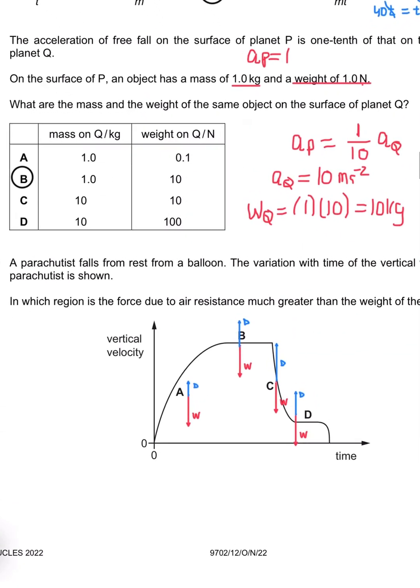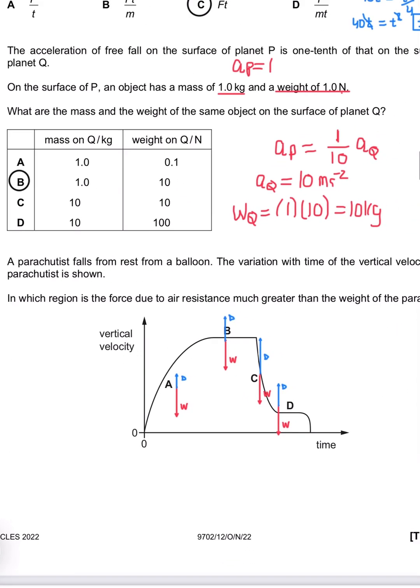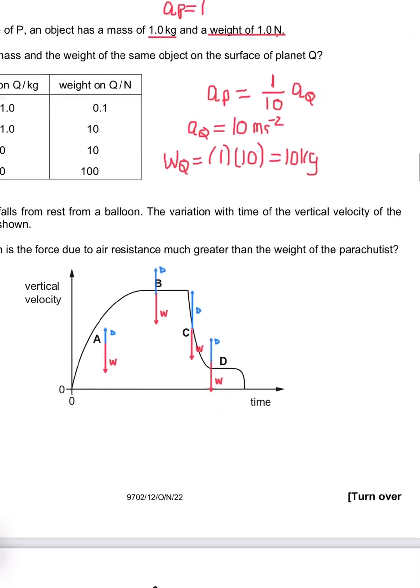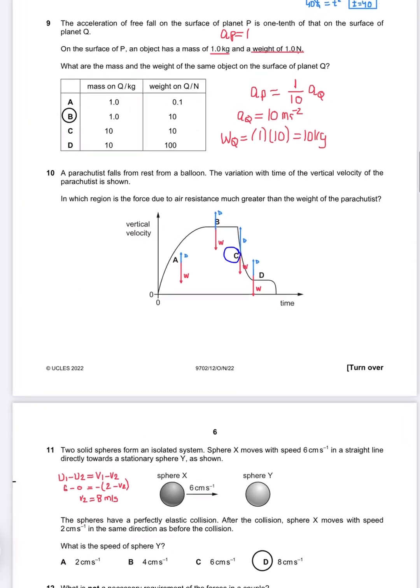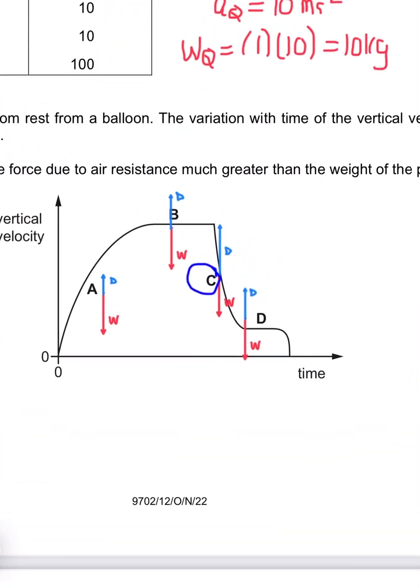Question 10 says, in which forces is air resistance greater than the weight? At C, the drag is greater than weight, so C is the appropriate answer. Basically that's the moment when the parachute opens and then it becomes terminal velocity.